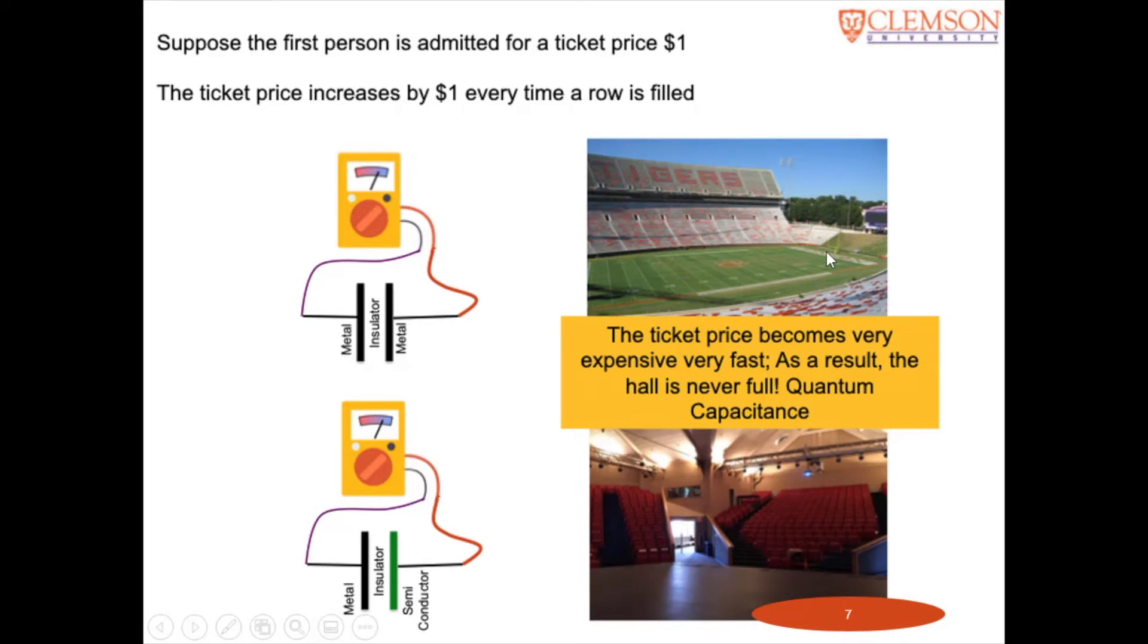And when there is the first person after hundred people, 101, then that person has to pay two dollars because he's going to go into the second row, for example.